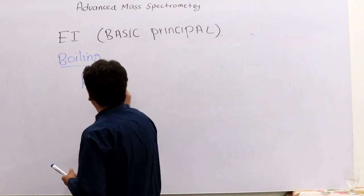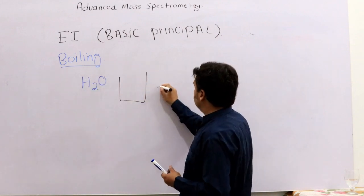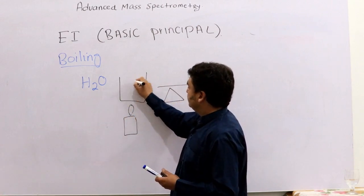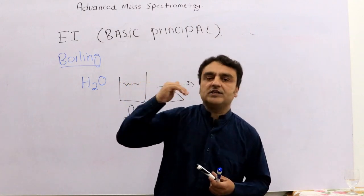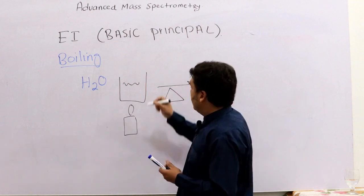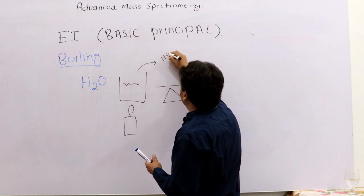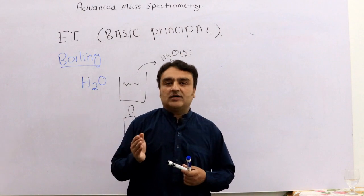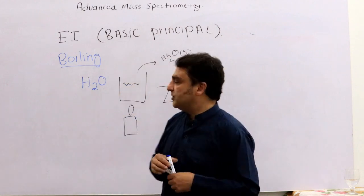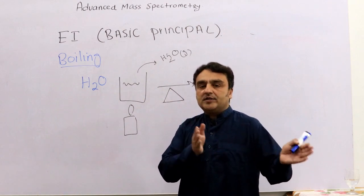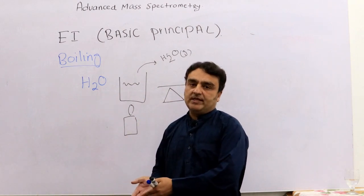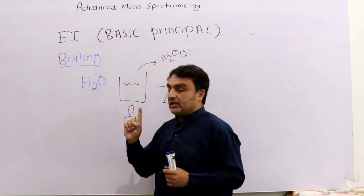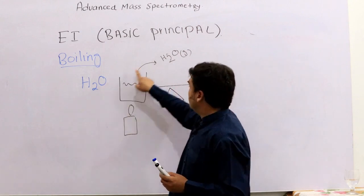If you have a container of water and heat it, it starts to evaporate and become a gas. The gas will be H2O molecules in gaseous form, and they are now isolated from each other. So the first step is achieved — you have separated individual molecules by boiling.